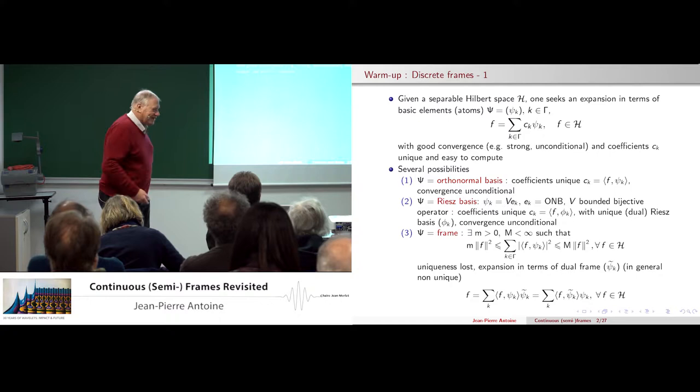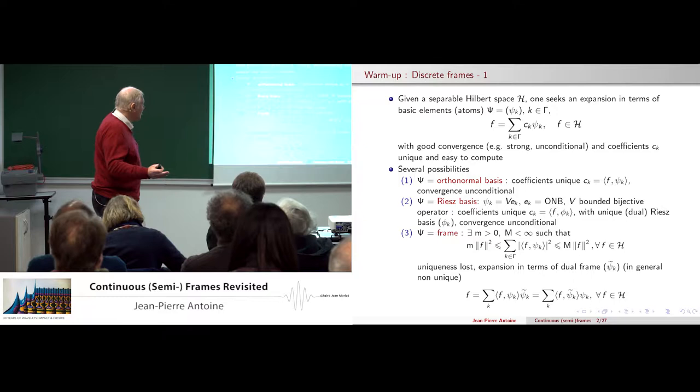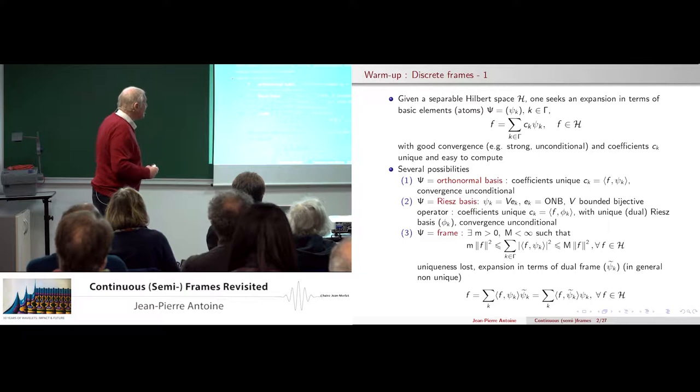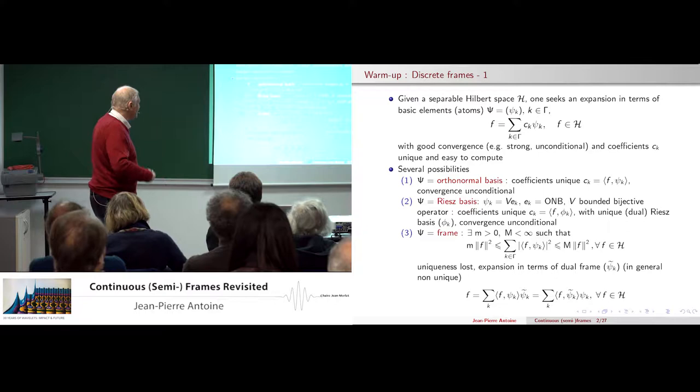We start by doing very trivial things. If you want to expand a function in terms of a family of atoms, you have a choice of more and more sophisticated things. At each step you lose some property — uniqueness, etc. This is all standard.